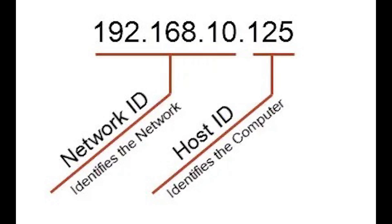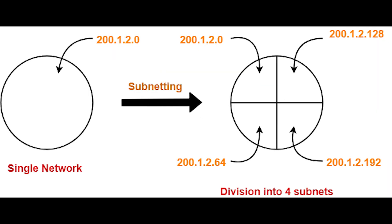There are two parts to an IP address: network ID and host or node ID. Treat the network ID as a classroom and treat the host ID or node ID as an individual student. To make it efficient, it's logical to have more classrooms in order to facilitate a high amount of students. Subnetting does not increase the number of IP addresses available — it increases the number of network IDs and as a result decreases the number of node IDs per network.